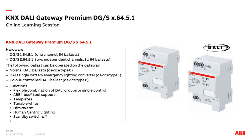Both DALI Gateway Premiums have identical functions but different numbers of DALI outputs. The DGS-16451 has one DALI output and the DGS-26451 has two independent DALI outputs. Normal DALI ballast device type 0, DALI single battery emergency lighting converters device type 1, and colored control DALI ballast device type 8 can be connected to both. The gateways offer extensive functions including templates, tunable white, human-centric lighting, DIMM-TO-WARM, flexible group or single ballast control, and IBAS tool support.